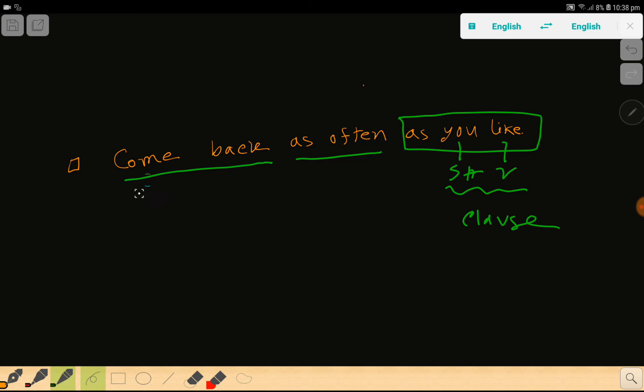Come back - this is verb and here we have subject you. So this is also another clause. So this as is connecting this clause and this clause. So this as is a conjunction.